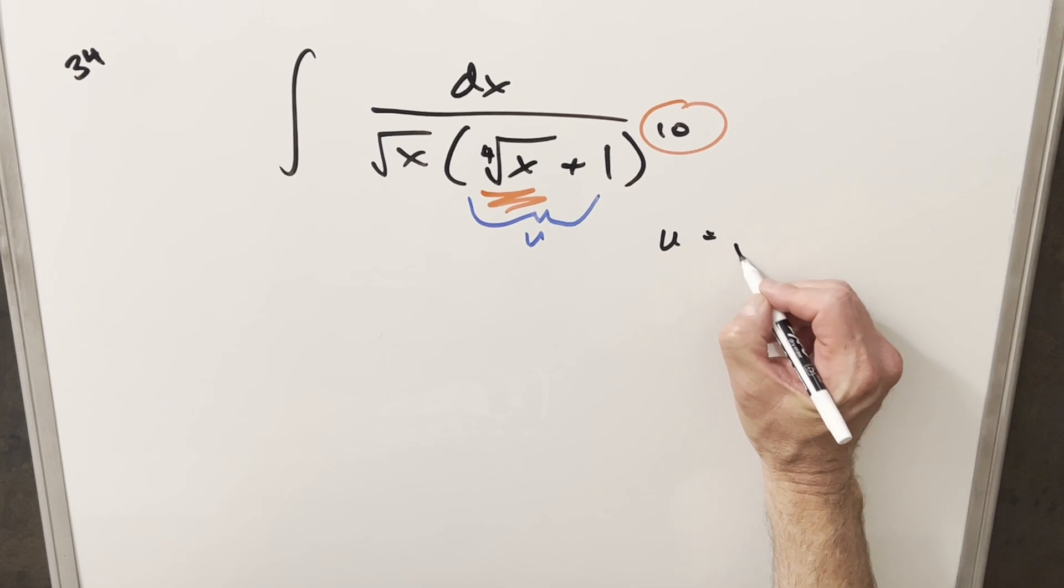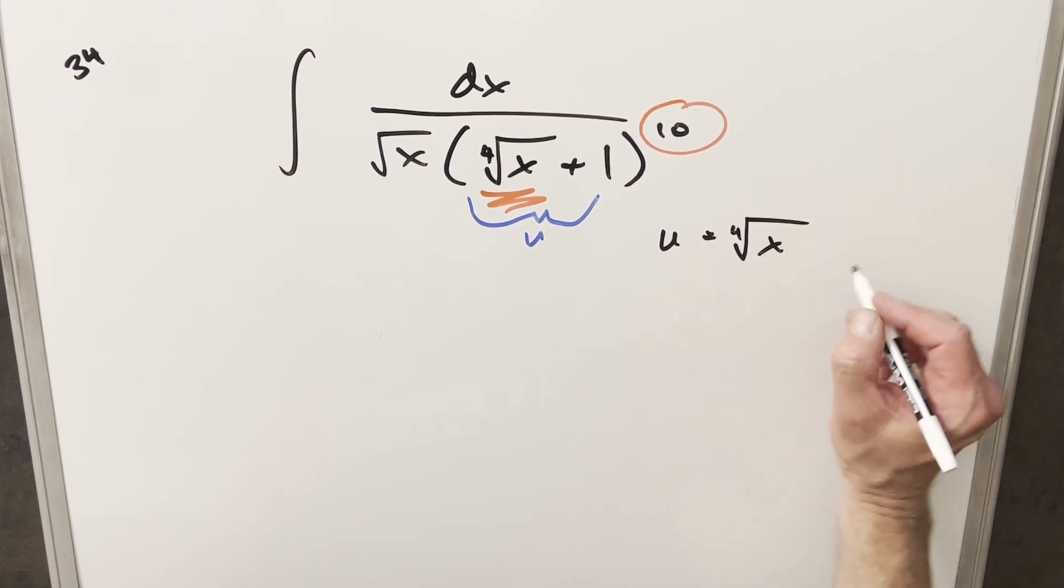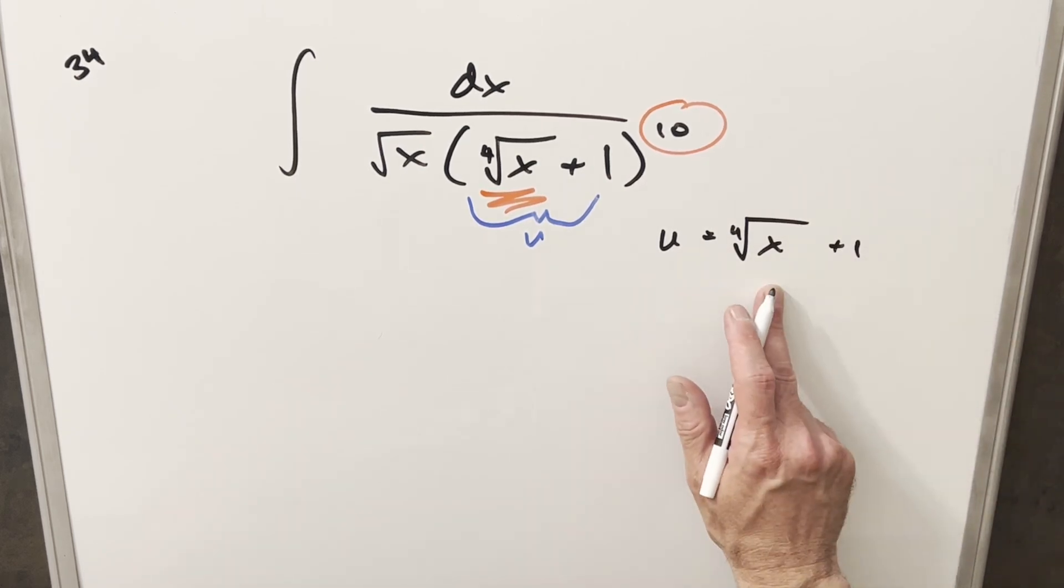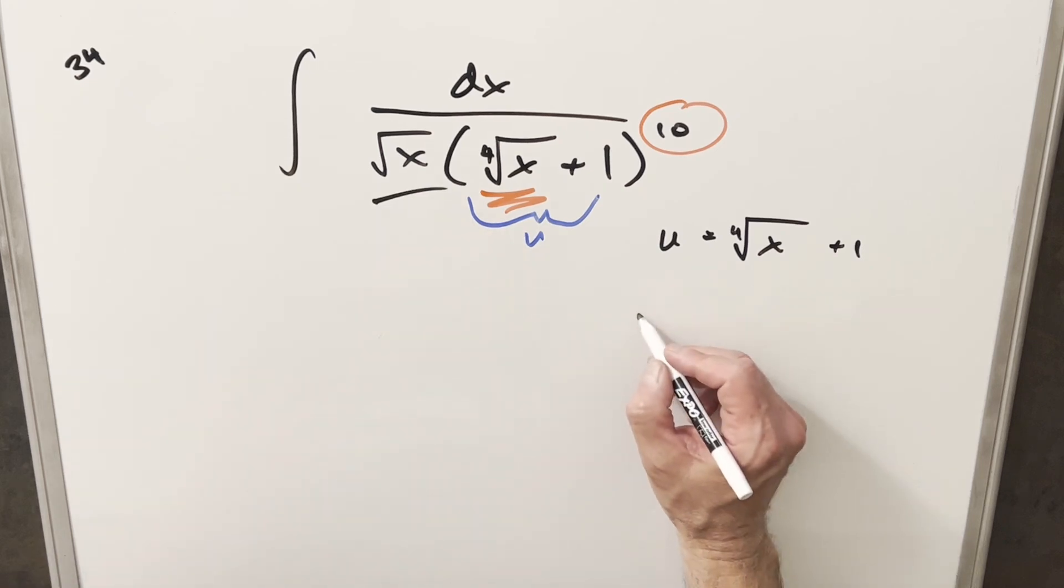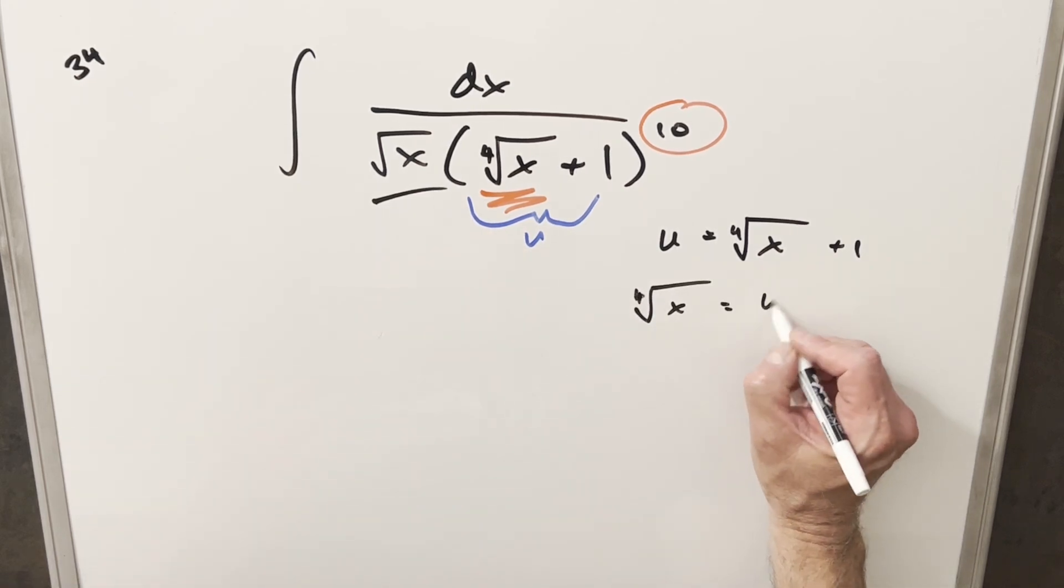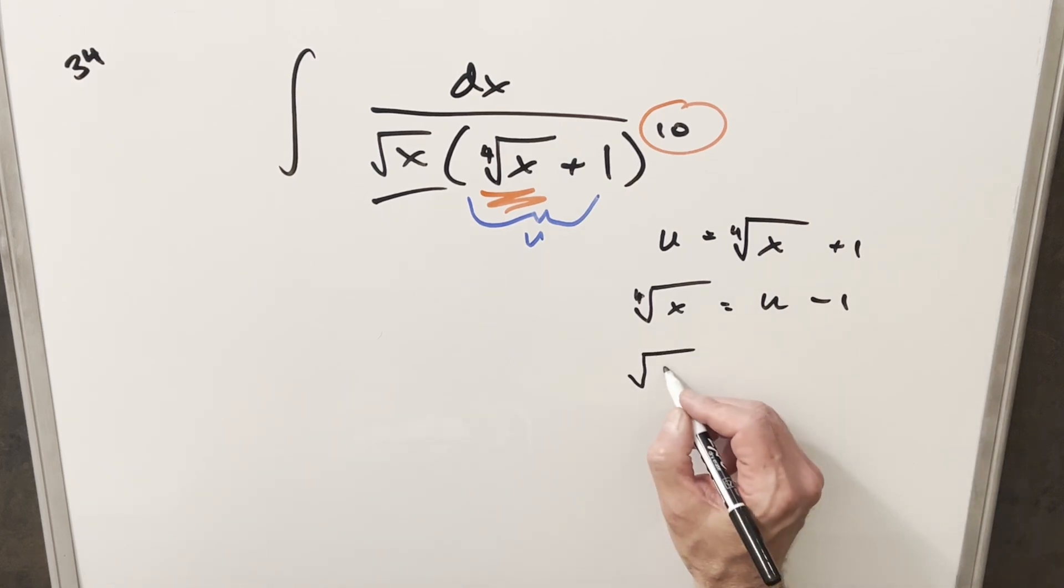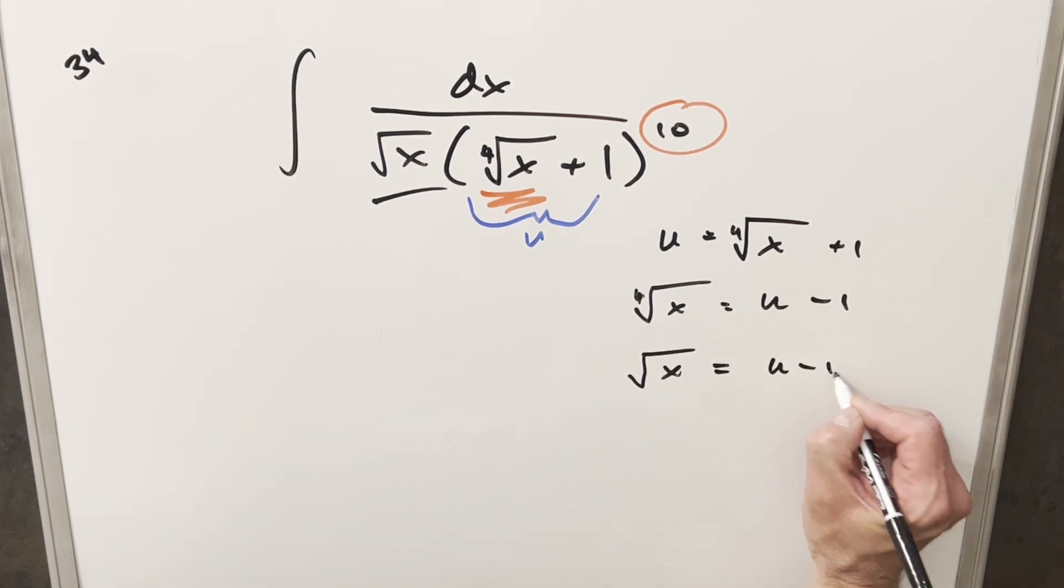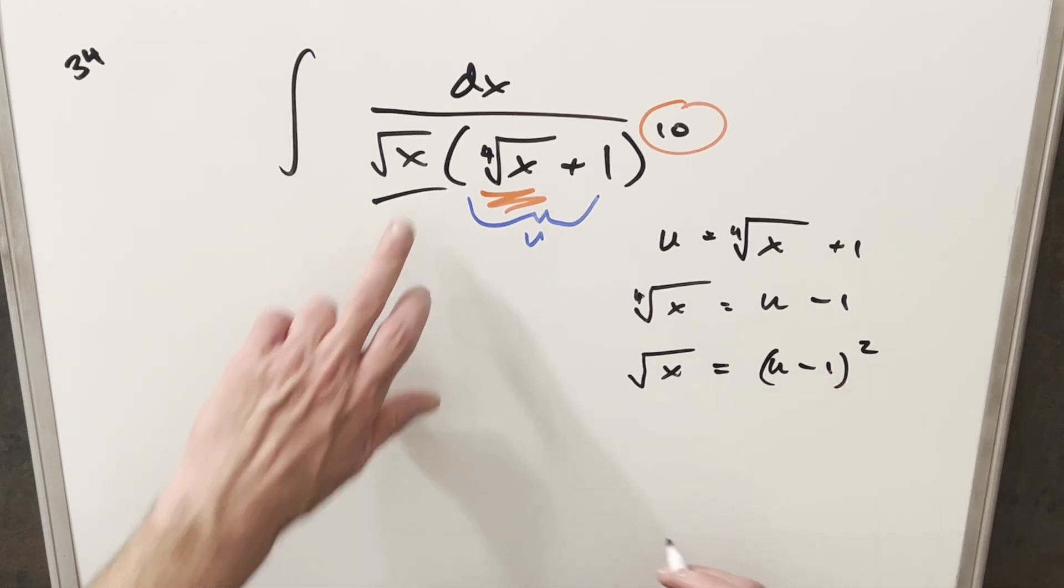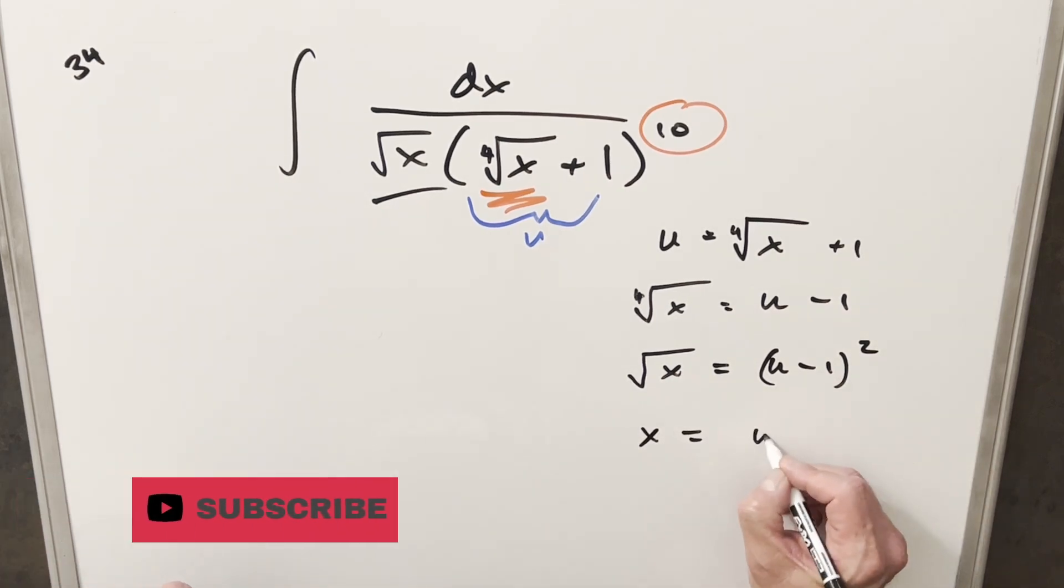I'm going to make my u equal to the fourth root of x plus 1 and then let's just solve for x. I think I'm also going to solve for the square root of x while I'm at it. So the fourth root of x equal to u minus 1. If I square both sides here we end up with the square root of x equal to u minus 1 squared. That gets us this value. Squared again we get x is going to be equal to u minus 1 all to the fourth.